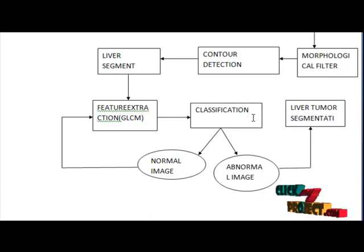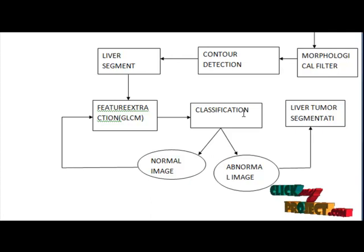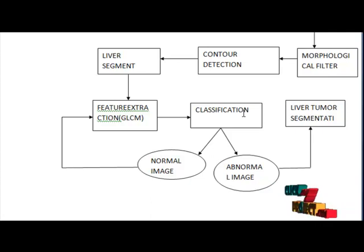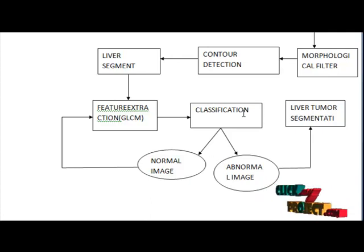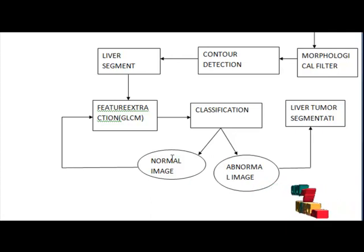Classification is performed using the KNN algorithm. KNN is a pattern recognition method. The K-Nearest Neighbor algorithm classifies objects based on closest training samples in the feature space. KNN is a type of instance-based learning where the function is only approximated locally and all computation is deferred until classification. An object is classified by a majority vote of its neighbors, assigned to the most common class among its K nearest neighbors.